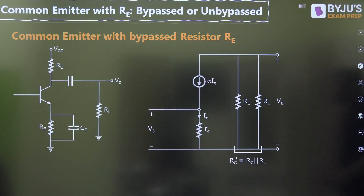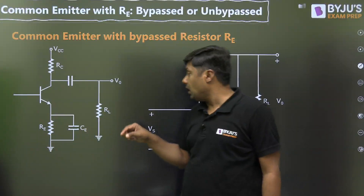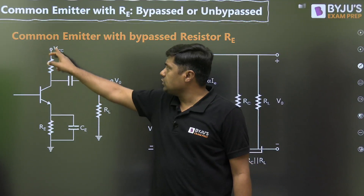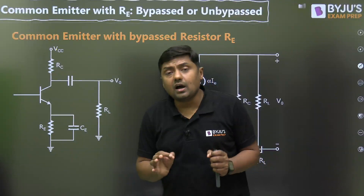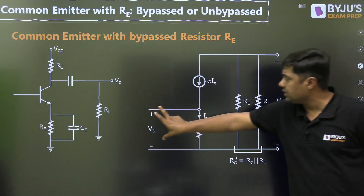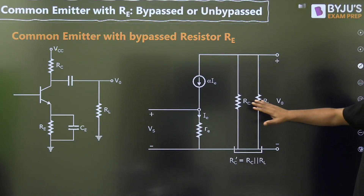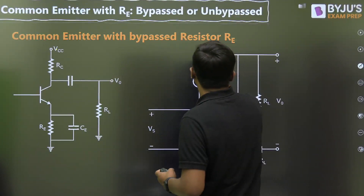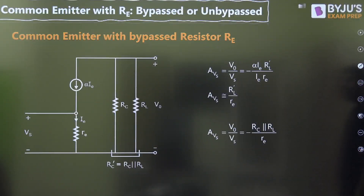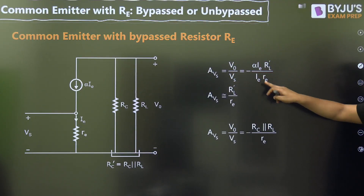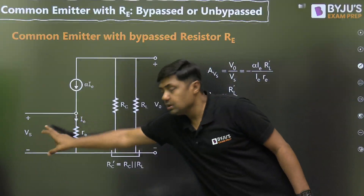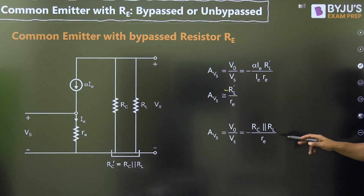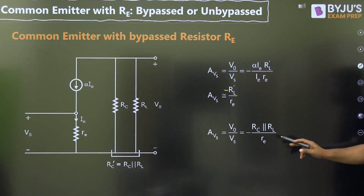For the fourth diagram — bypassed RE with RL at the output — the capacitor short-circuits RE and VCC tends to zero. From the collector to ground, RC is connected; from collector to ground, RL is also connected, meaning RC and RL are in parallel. The small signal model has alpha·IE, small re, Vs at the base, and RC parallel with RL at the collector, called RL-dash. Then V0 equals minus alpha·IE times RL-dash, and Vs equals IE times small re. The final answer is minus (RC parallel with RL) divided by small re.